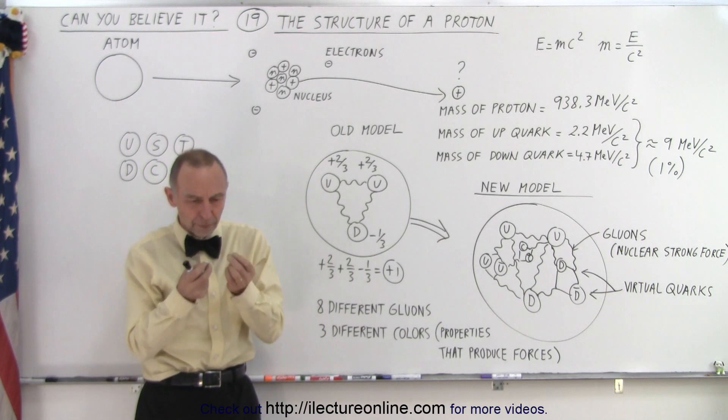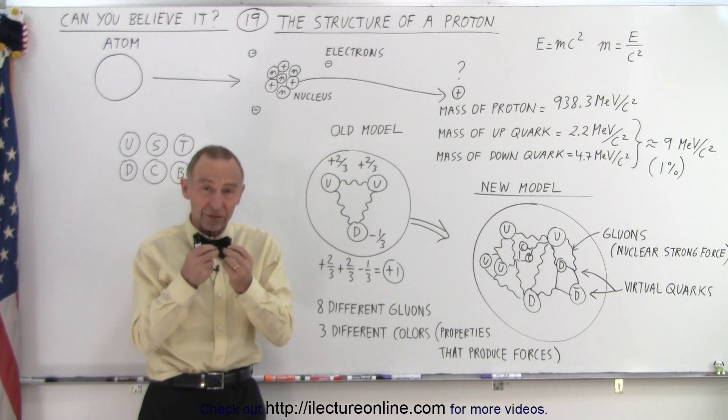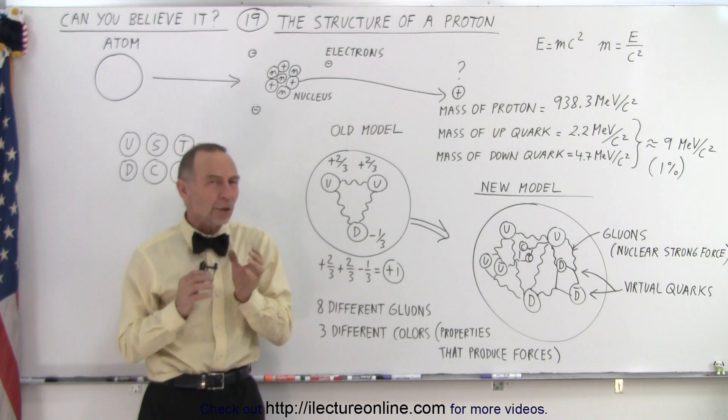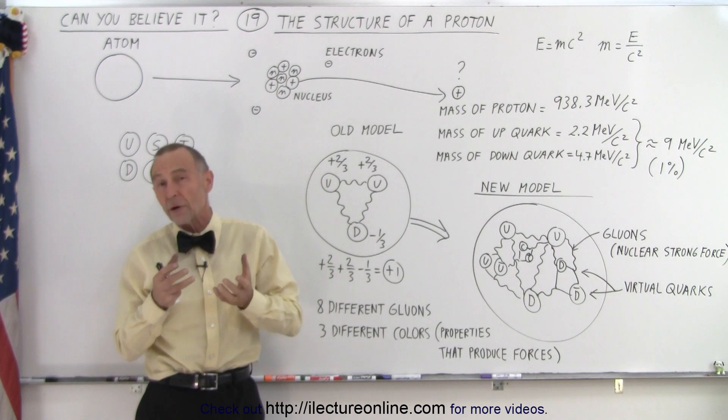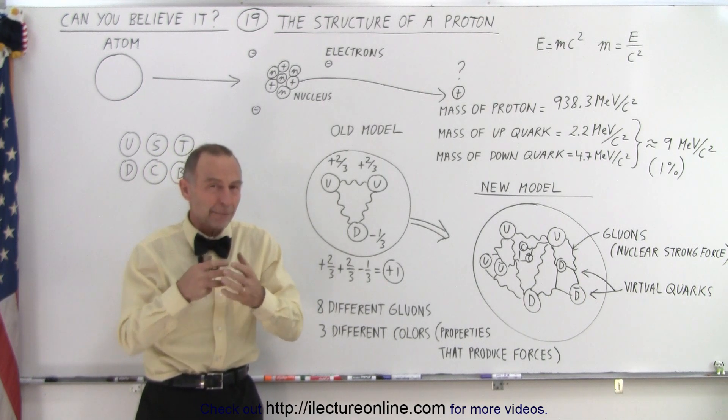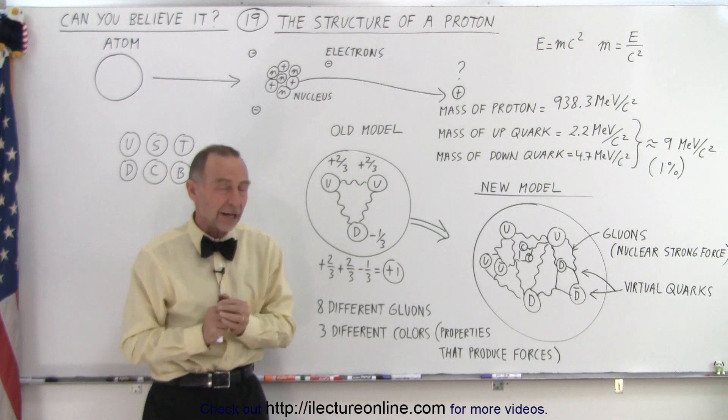We thought that the electrons were just simple point objects, and we believe that still is the case, and we thought that maybe protons and neutrons were also the simplest form of matter in point objects, or very, very tiny objects.